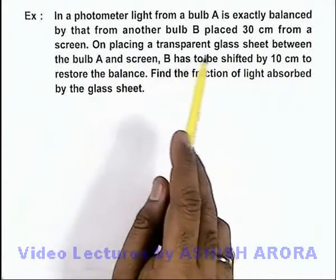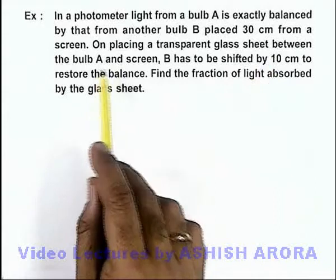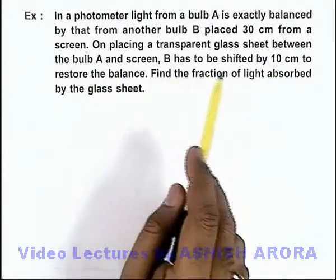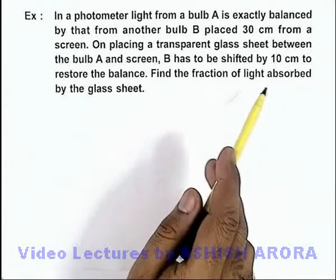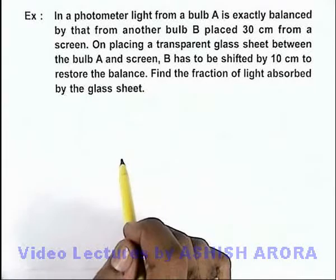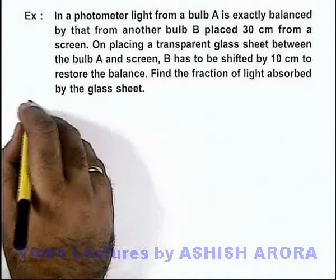On placing a transparent glass sheet between the bulb A and screen, B has to be shifted by 10 centimeters to restore the balance. We are required to find the fraction of light absorbed by the glass sheet.